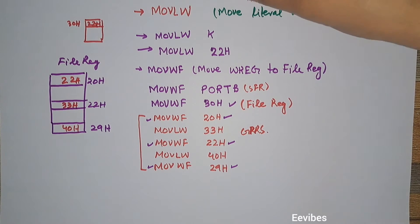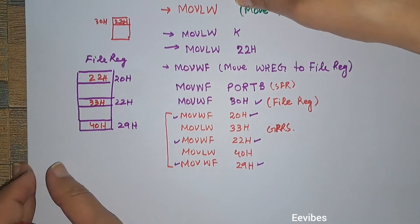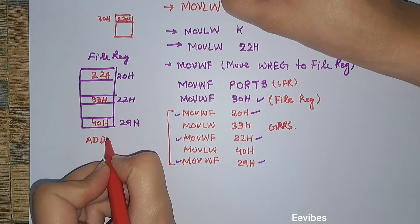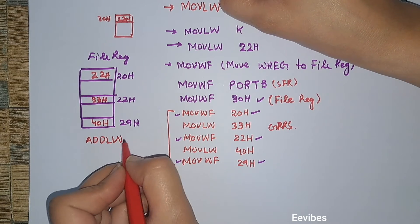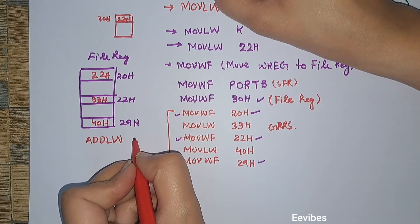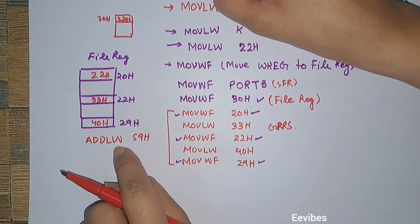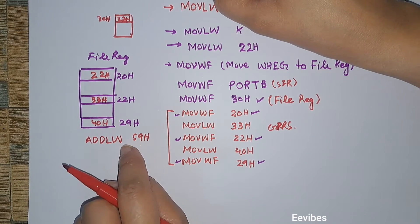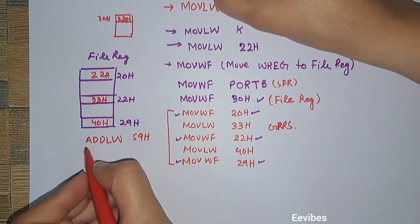The next instruction to remember is ADDLW — Add Literal Value to the W register. For example, ADDLW 59 hex means that 59 hex will be added to whatever value the W register is currently containing.